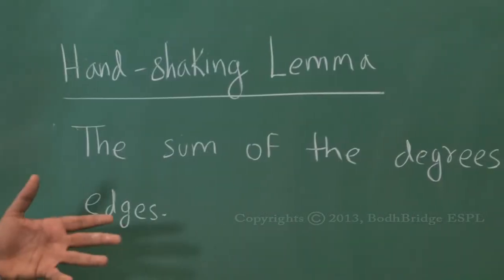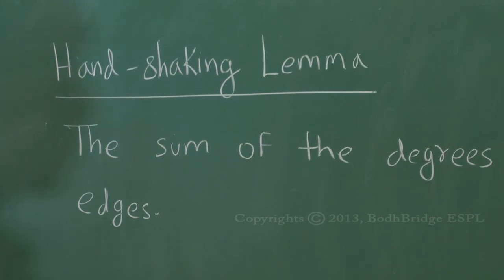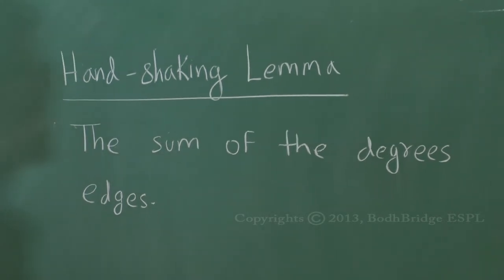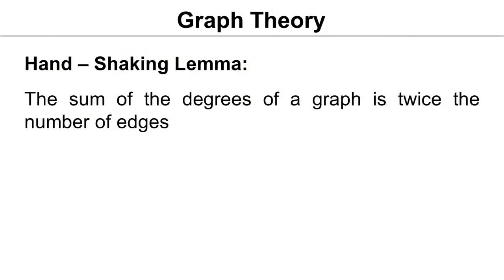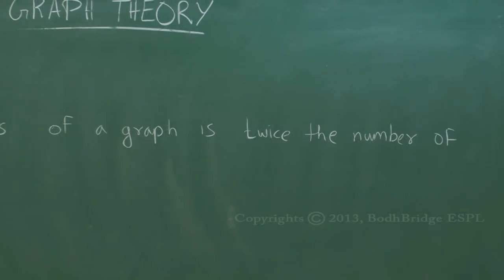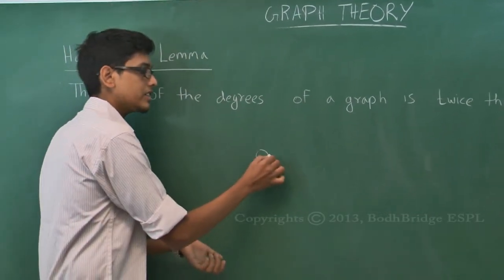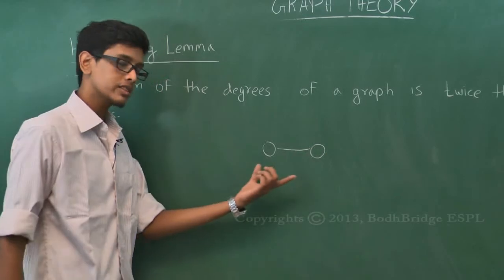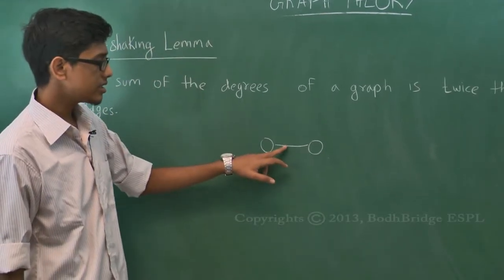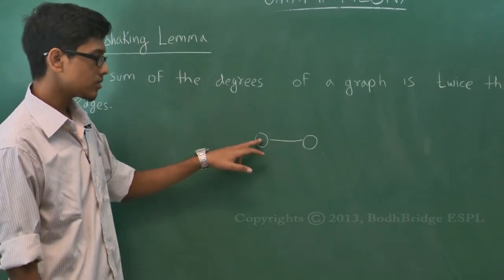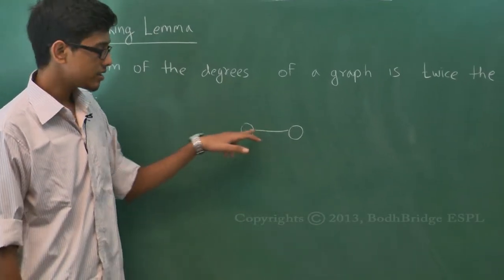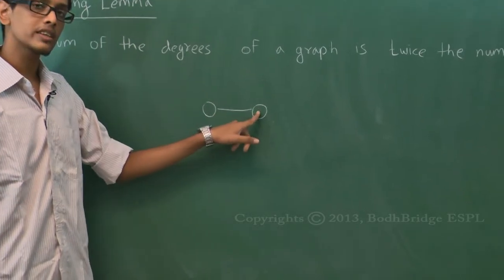Next we will look at a lemma which will be very useful in many problems and proofs in graph theory, known as the handshaking lemma. The handshaking lemma states that the sum of the degrees of a graph is twice the number of edges. This is very intuitive — every edge connects two different vertices, so this edge adds one to this vertex's degree and one to the other vertex's degree.